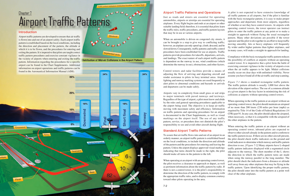Just as roads and streets are essential for operating automobiles, airports or airstrips are essential for operating airplanes. Every flight begins and ends at an airport or other suitable landing field. Therefore, it is essential that pilots learn the traffic rules, traffic procedures, and traffic pattern layouts that may be in use at various airports. Unlike an automobile, which can be brought to a stop to give way to conflicting traffic, an airplane can only speed up, climb, descend, and be slowed down. Consequently, traffic patterns and traffic control procedures have been established for use at airports.